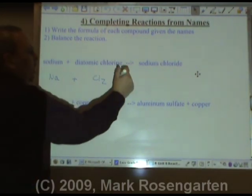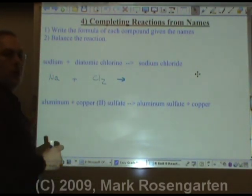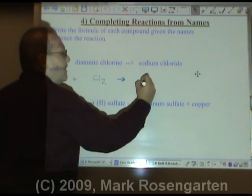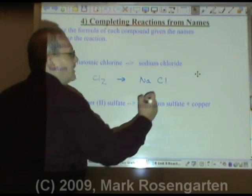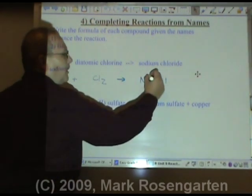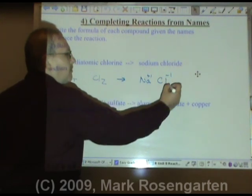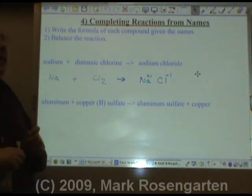Then we have the arrow and sodium chloride. Well sodium is Na. Chloride is Cl. Sodium has a plus one charge. Chloride has a minus one charge. So the formula is NaCl.